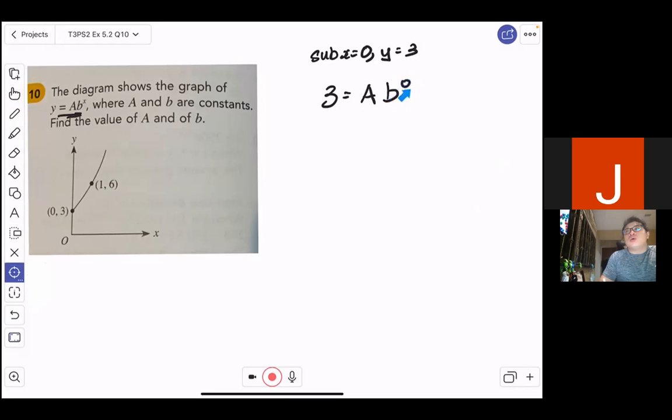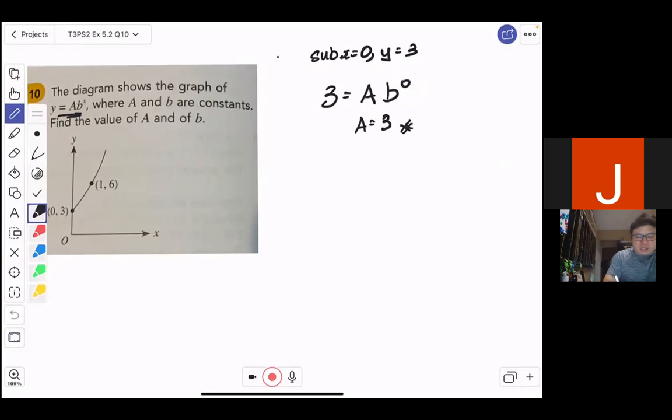Now, b to the power of 0 will just be equals to 1. So with that, I'll get straight away, my answer is a multiplied by 1, a equals 3. So that's the first step.